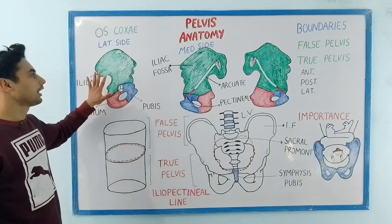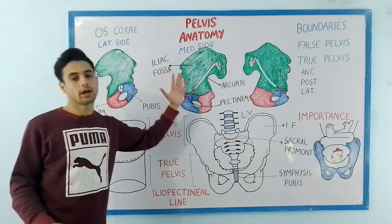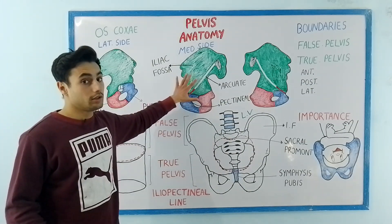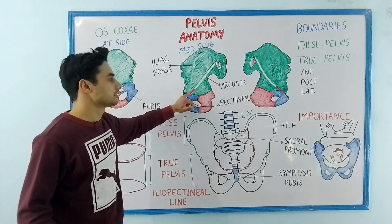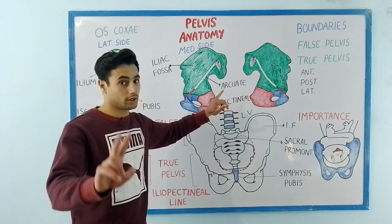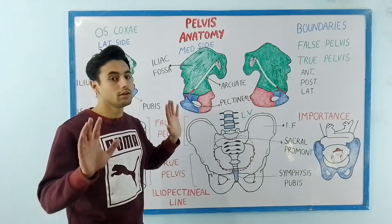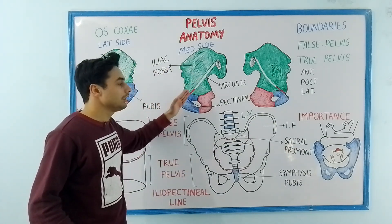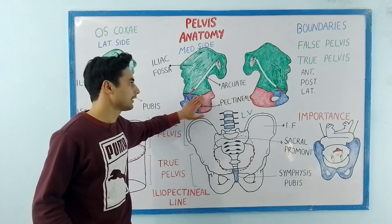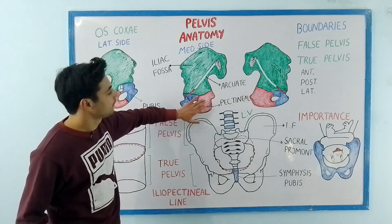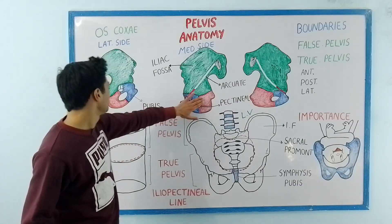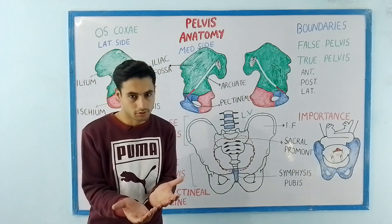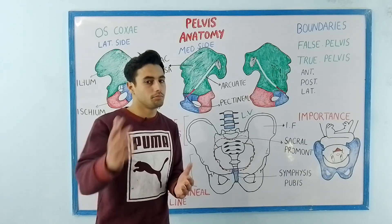This is the lateral side, and if I turn it we get the medial side of the hip bone. The medial side is divided by this line, shown in white, into two parts. Above is the iliac fossa, and beneath this arcuate line we have the flat surface which continues with the flat surface of the pubic and ischium bones. The iliac fossa is a depression which contains the iliacus muscle.